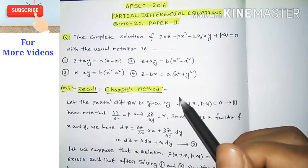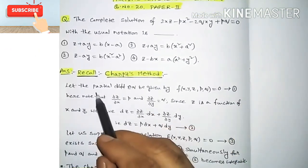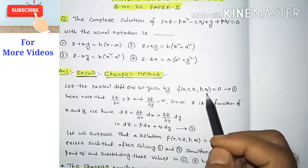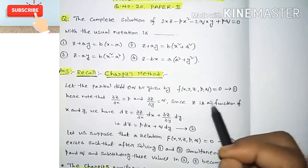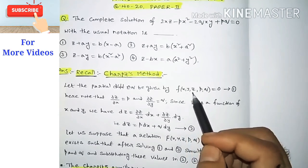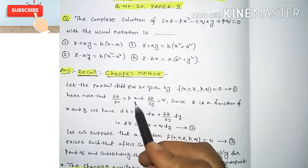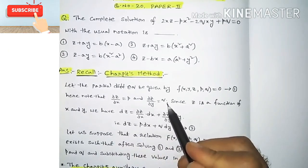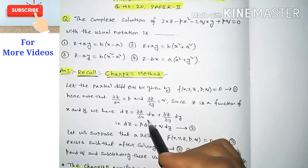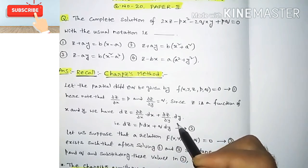Let us see Charpit's method. The partial differential equation is given by f(x, y, z, p, q) = 0, let it be equation number 1. Here note that the notation ∂z/∂x = p and ∂z/∂y = q. Since z is a function of x and y, we have dz = (∂z/∂x)dx + (∂z/∂y)dy.